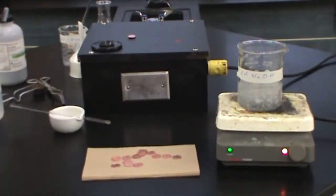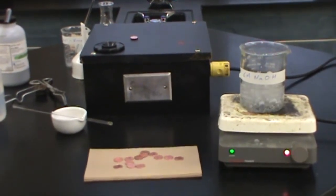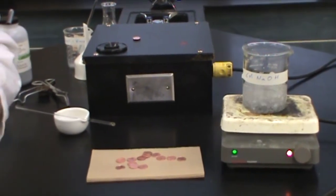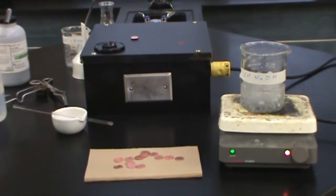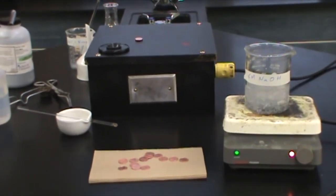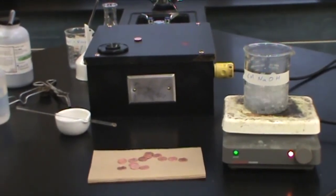The next step is to add our pennies to the solution, making sure they are in contact with the zinc powder. Here the zincate ion will reduce to solid zinc which will collect on the penny and coat it.